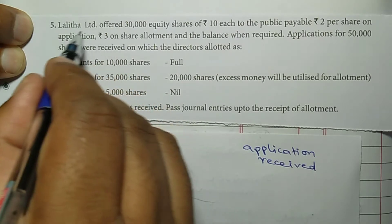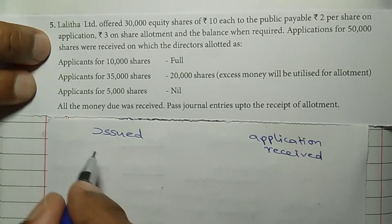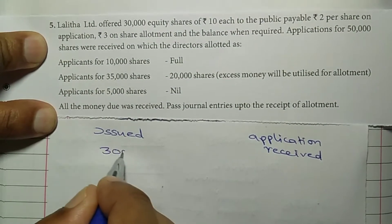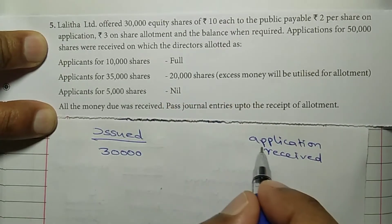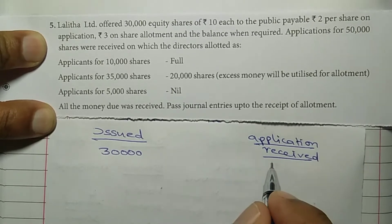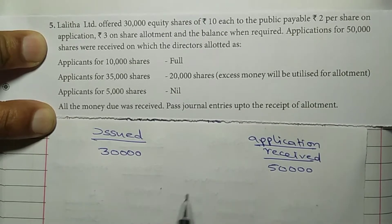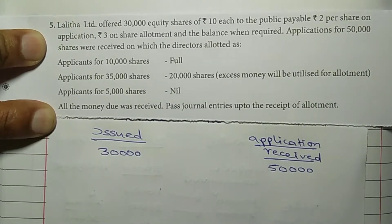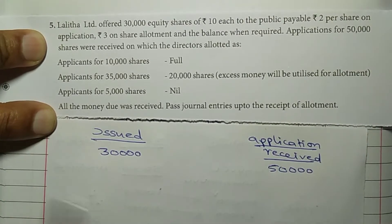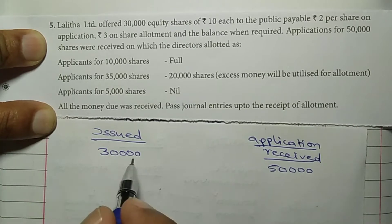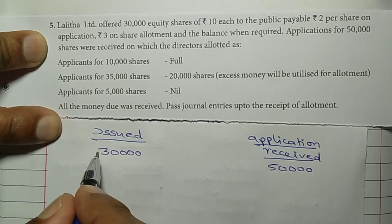Lalitha Limited offered 30,000 equity shares — so how many shares are issued? 30,000 shares are offered, that is issued. But how many applications are received? Applications for 50,000 shares were received. The number of shares applied is more than the number of shares issued. That is called over-subscription.